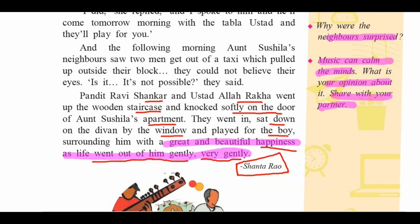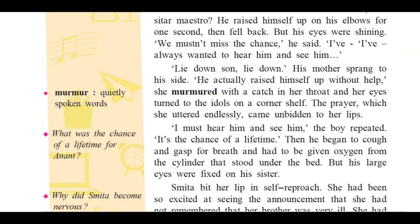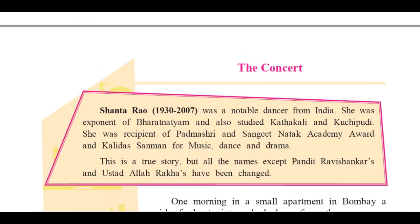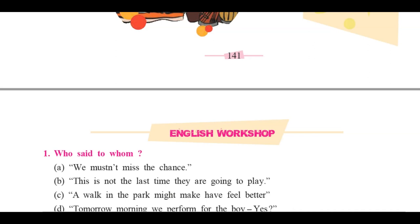This is called the greatness of people like Pandit Ravi Shankar and Ustad Allah Raka Sahib. Hope you understood this particular story. If you have any questions or doubts, you can put them in the comment box or text me on my mobile number. In this way, we completed The Concert — a story written by Shanta Rao. Part two will come, related to the English workshop. Thank you so much for listening to me carefully. I request you all to subscribe to my channel, like and share the video. Thank you.